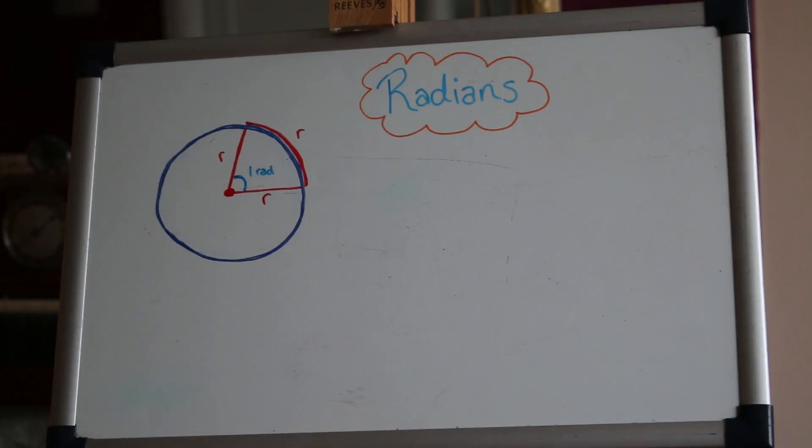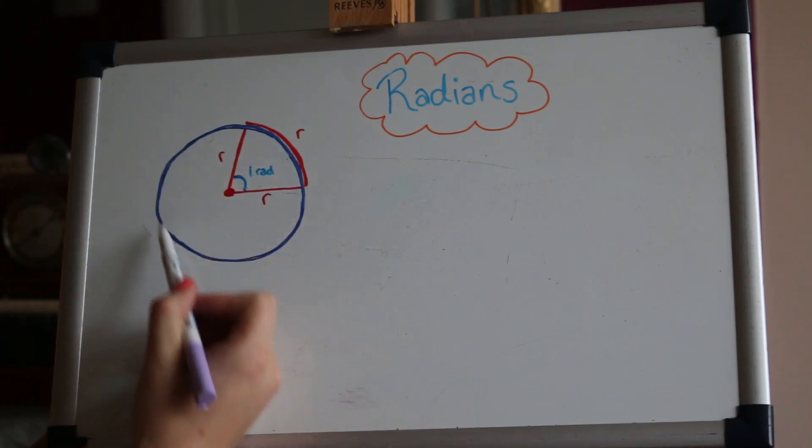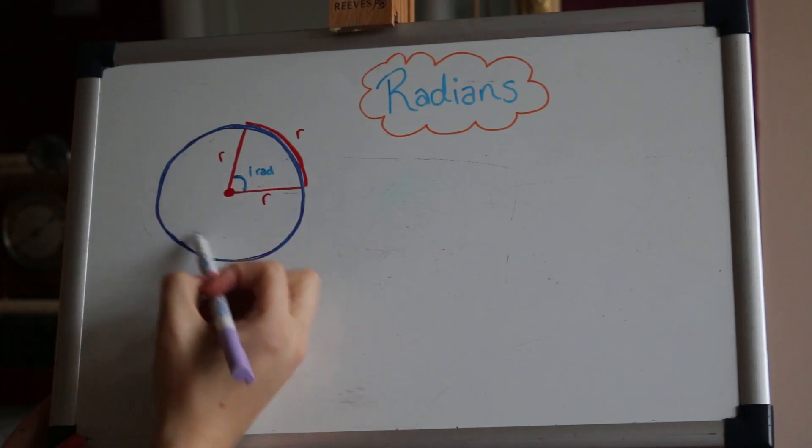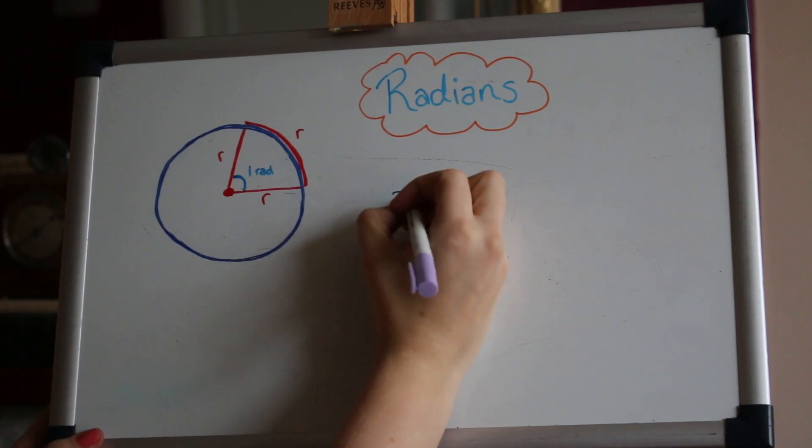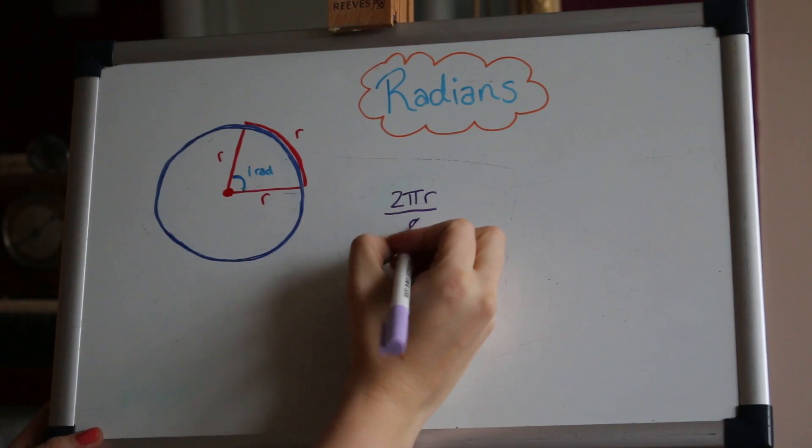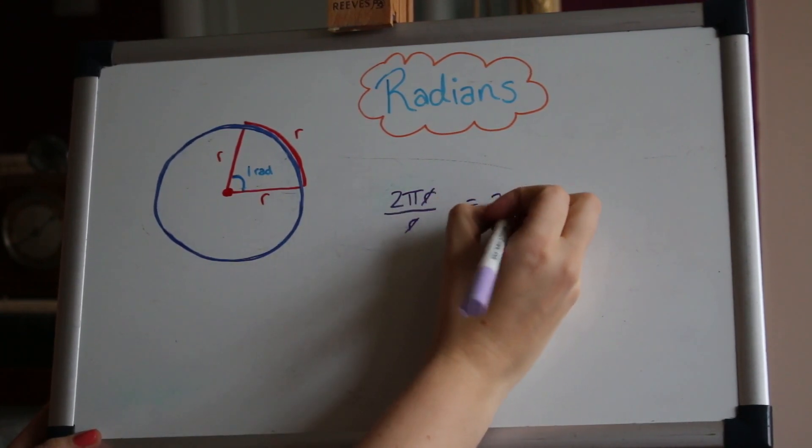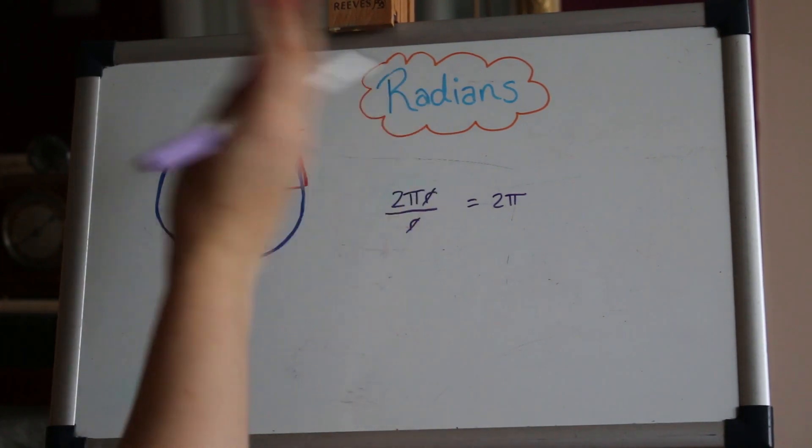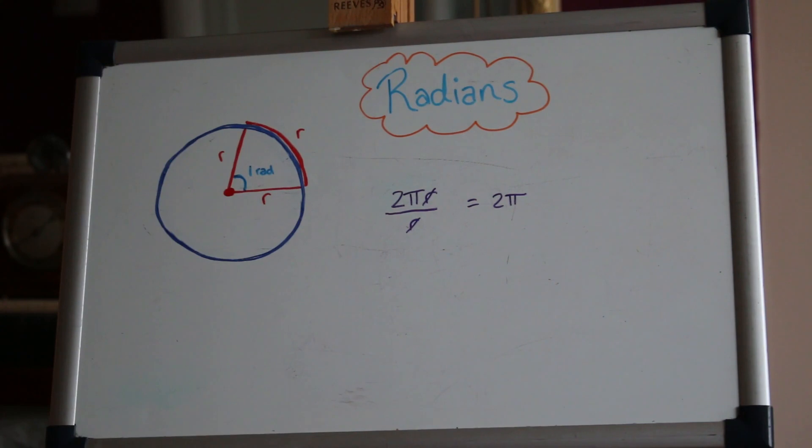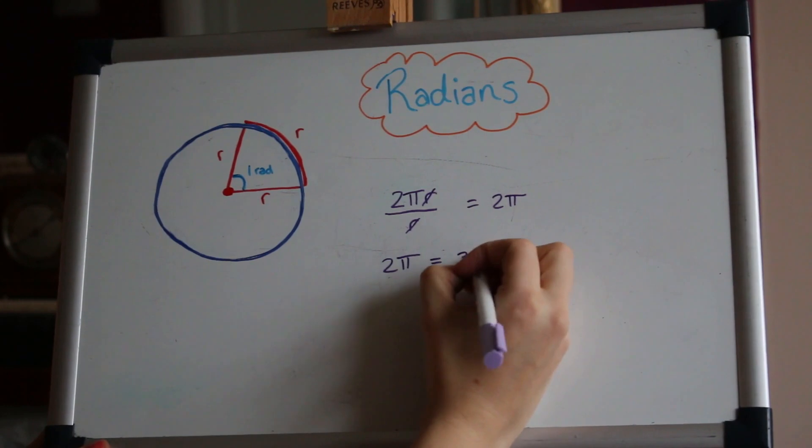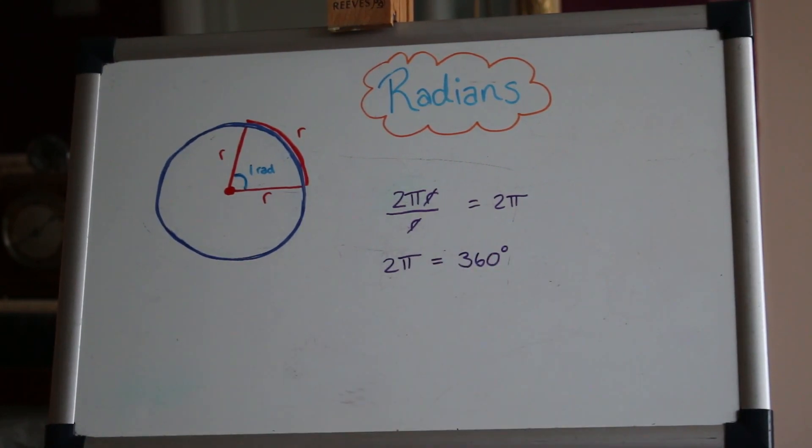Now we know that the full circumference is pi times the diameter or 2πr, so the full length around here is 2πr. Now to work out how many of these would fit around the full circumference, we could do 2πr divided by the length which is r, and that gives us 2π. So what that tells us is there's 2π lots of radians in a full turn of a circle. So 2π radians is the same as what we would normally think of as 360 degrees.